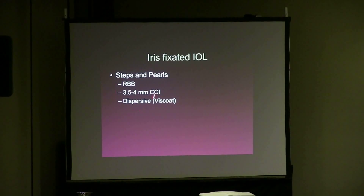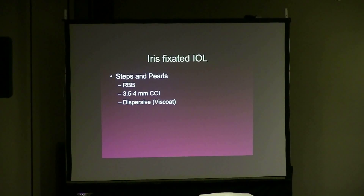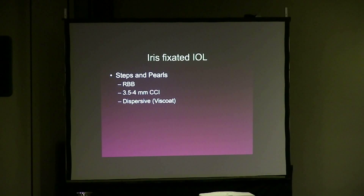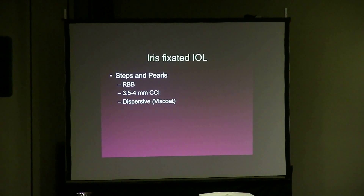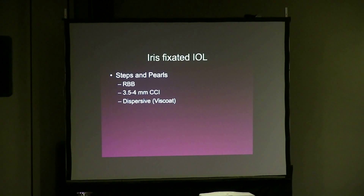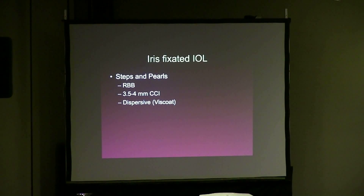The iris-fixated IOL can be done through a 3.5 millimeter wound — you do not have to create a big wound as for a PMMA lens, which typically requires a 5 to 5.5 millimeter wound. So astigmatism is less and potential for infection is less with a small corneal incision. Additionally, you don't have to cut the conjunctiva or make a scleral tunnel — especially important in these traumatic eyes with higher risk of glaucoma, preserving conjunctiva for future glaucoma surgery.